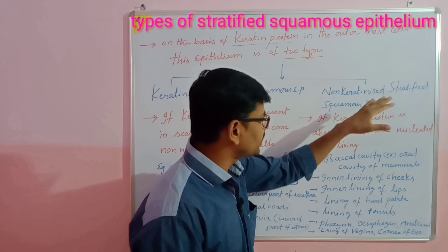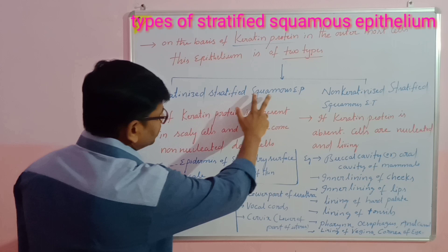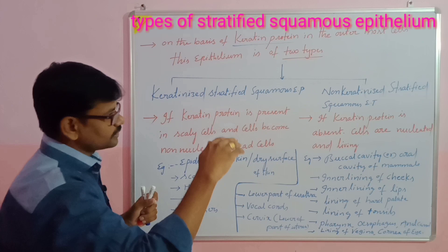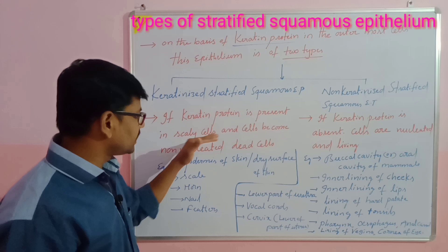Keratinized stratified squamous epithelium has many layers present. 'Squamous' refers to the topmost cells of the tissue being tile-like or scaly. Keratinized means the keratin protein is present in these scaly cells, and the cells become non-nucleated dead cells.